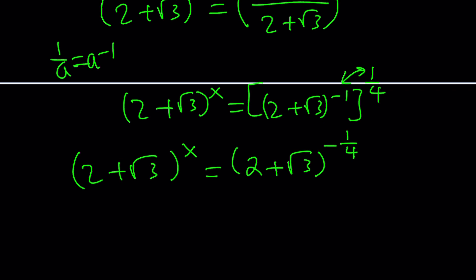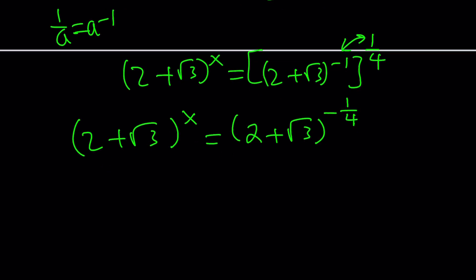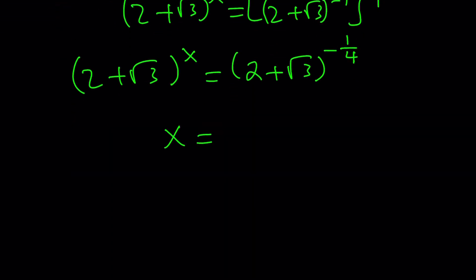And what does that mean? The bases are equal, so are the exponents. So, x equals negative one-fourth. Who would have thought, right? This is so complicated. Well, not really, but unless you know the trick, of course. So, that is the answer. We found it. Is there another way to do it?